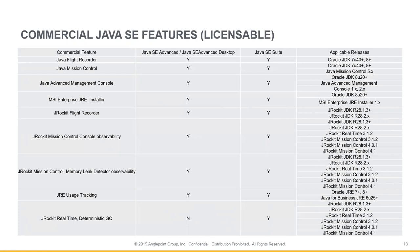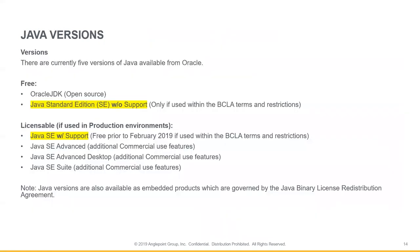Although this isn't part of Oracle's recent policy change, it's important to understand all aspects of Java licensing to make sure your organization is fully compliant. There are currently five different types of Java from Oracle. Here's a breakdown of what's free at a high level versus what's licensable.